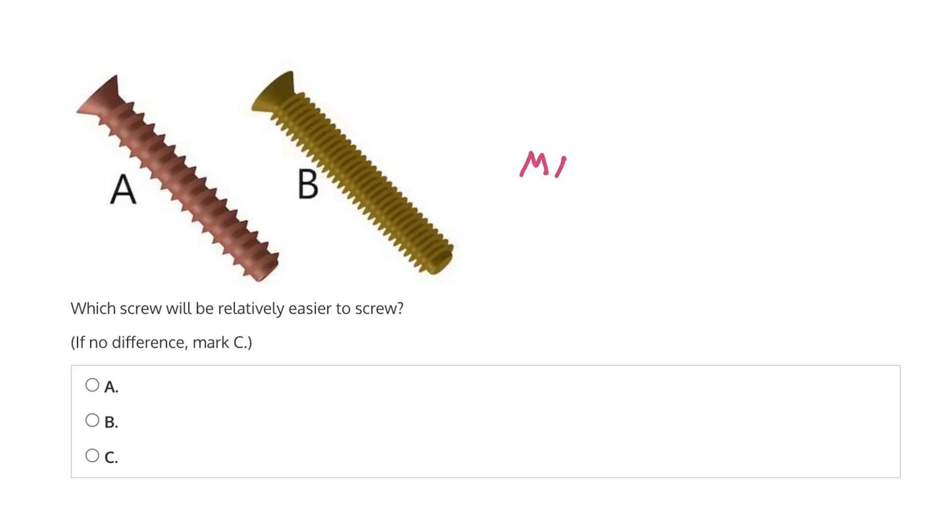So for screws, the mechanical advantage is equal to the circumference, which again, we said are the same for A and B, divided by what's called the pitch, which we can denote as L.